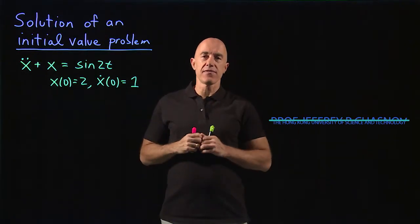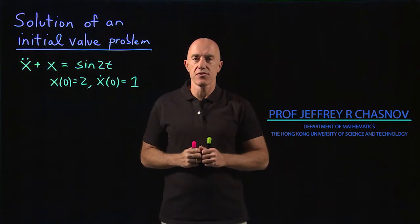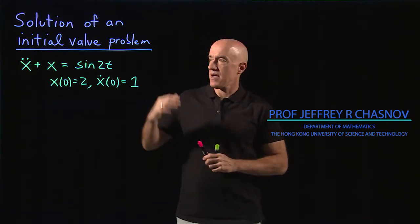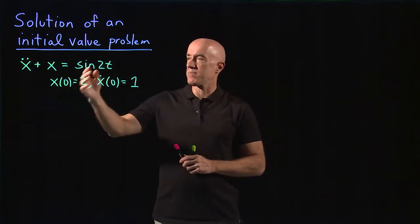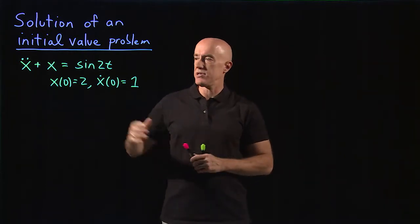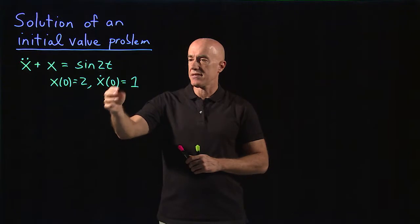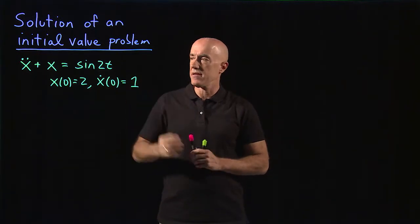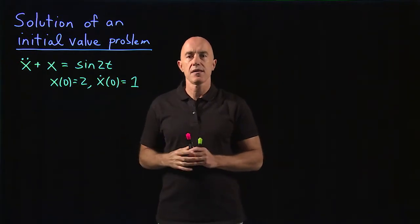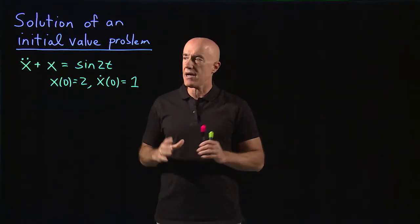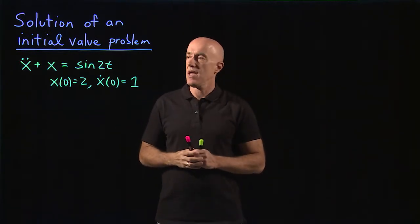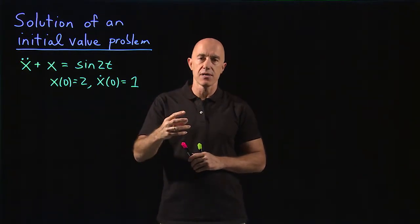So now let's solve a differential equation using the Laplace transform technique. The differential equation is going to be x double dot plus x equals sine 2t with two initial conditions: x of 0 equals 2 and x dot of 0 equals 1. We know how to solve this inhomogeneous differential equation already by a method of Ansatz, but here I want to solve it using the Laplace transform technique and show you that you can get the same solution.